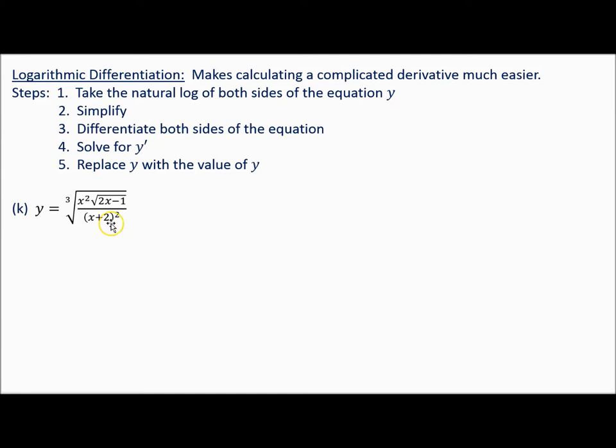Before we jump in, let's talk about how we would directly find this derivative. I would rewrite x squared, the square root of 2x minus 1 written to the 1 half, and the cubed root written to the 1 third power.